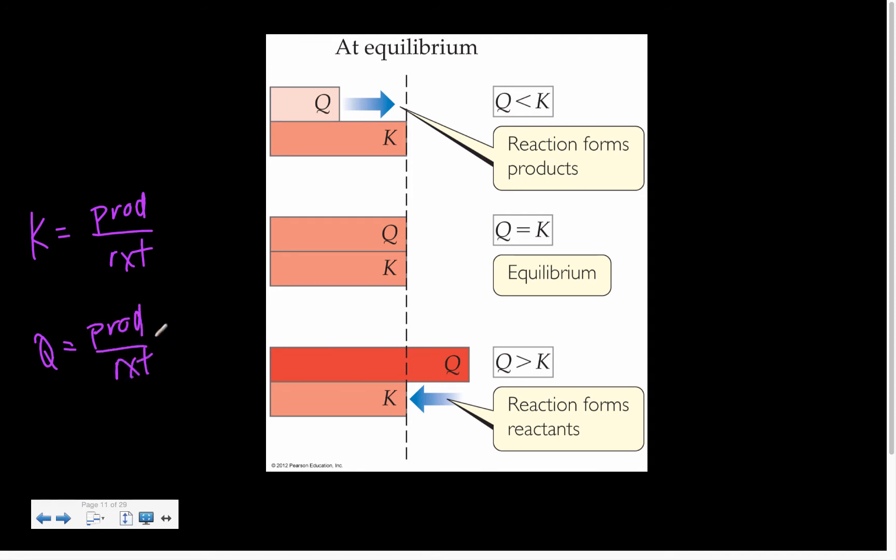If Q is less than K, we need to make it bigger, and that means make more product. Which is what this scenario is saying.